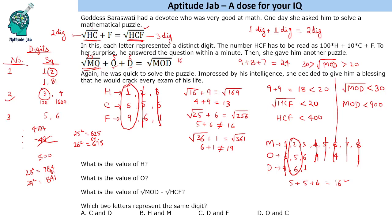So just for your satisfaction you can check 361 also. 36 is 6 and then we have 6 and 1 is 1, and this is 19 which is not equal. So this is the solution. So MOD is 256. So HCF is 169 and MOD is 256.